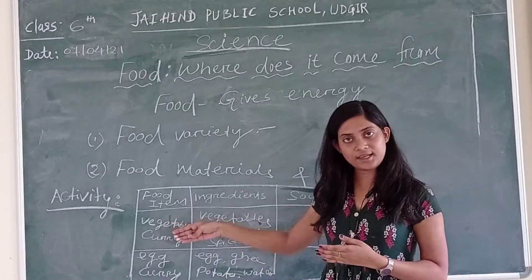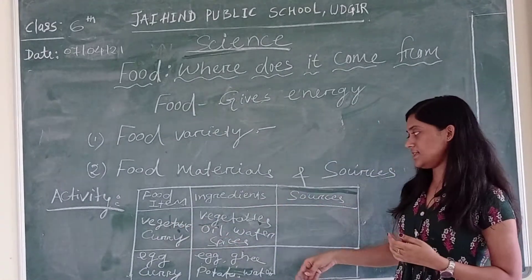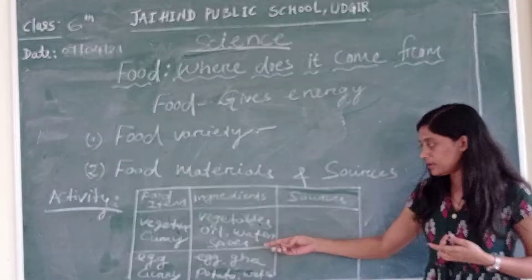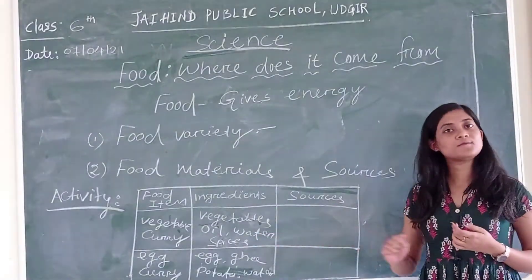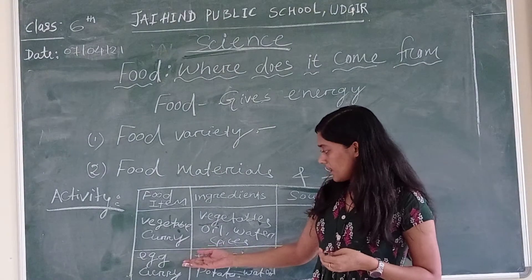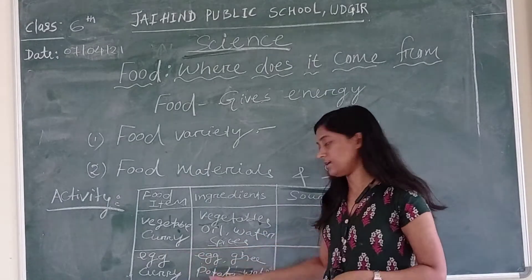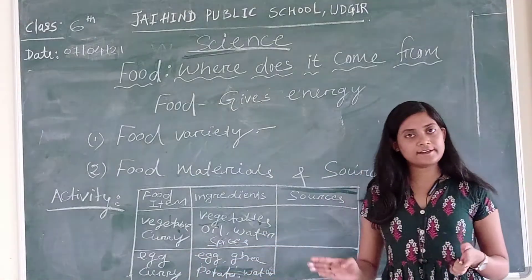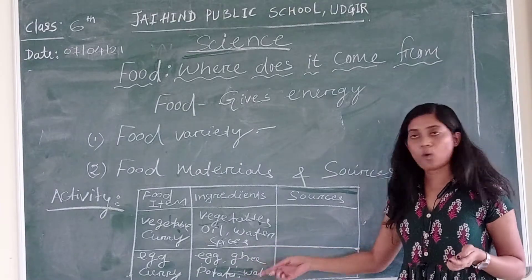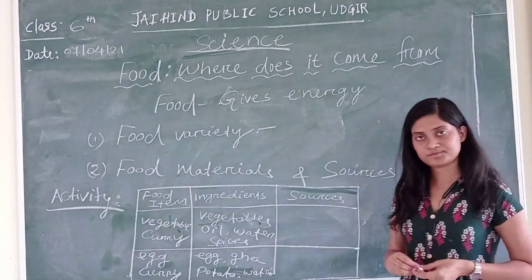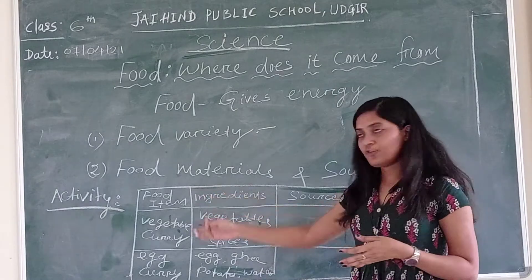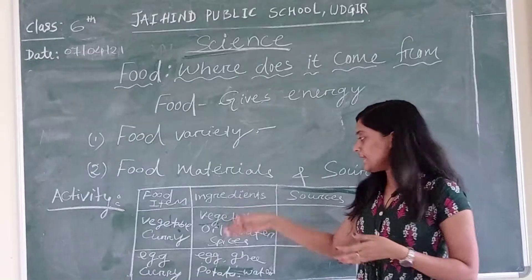For example, for vegetable curry the ingredients are vegetables, oil, water and different kinds of spices. I also had egg curry today. The ingredients for egg curry are egg, ghee, potato, water and tomato. You can also write your food items and the corresponding ingredients like this.